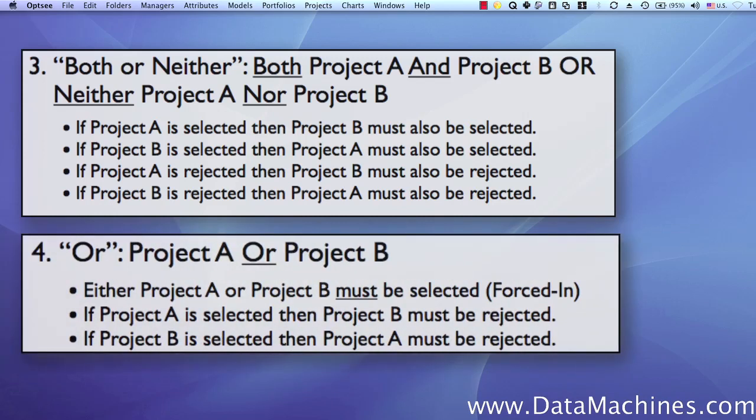The fourth project dependency is the or-dependency. This dependency forces in one project or the other, but not both. Either project A or project B must be selected or forced into the optimized portfolio. And if project A is selected, then project B must be rejected. And if project B is selected, then project A must be rejected.